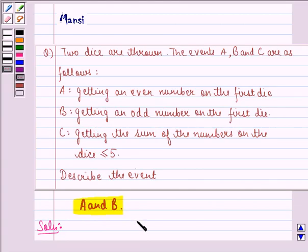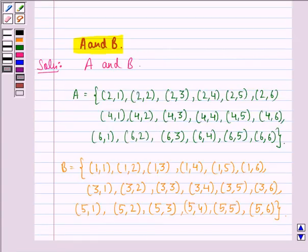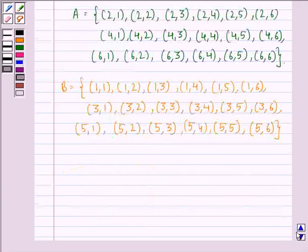So first of all what we do is we write down the sample space for the event A and the event B. So we see that this is a sample space for the event A and this is a sample space for the event B. Now we have to find the event A and B, that is A intersection B.